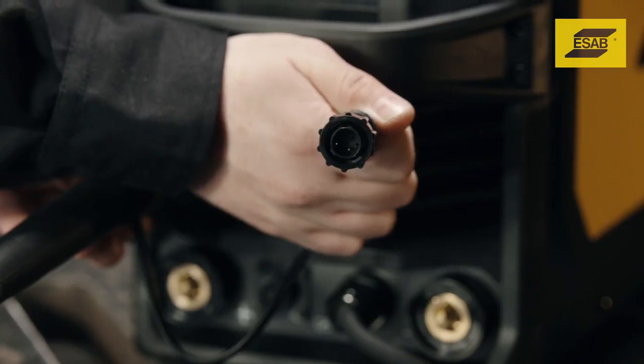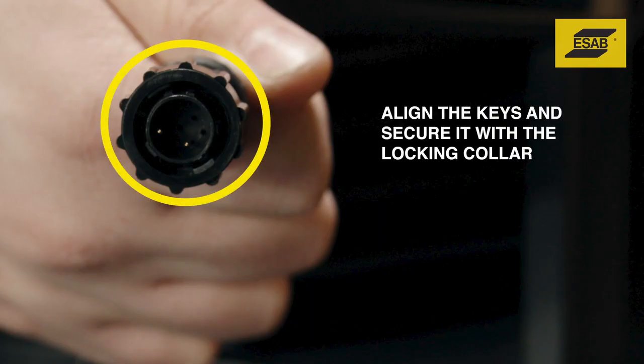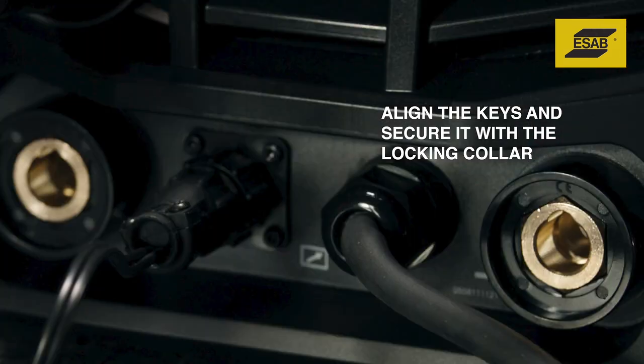Insert MIG gun control wire assembly into the receptacle while aligning the keys, then secure it with the locking collar.